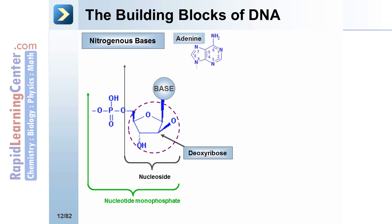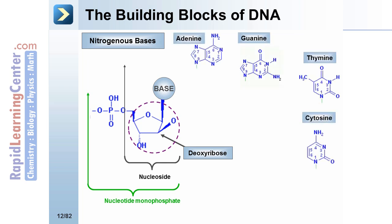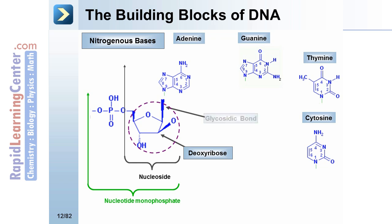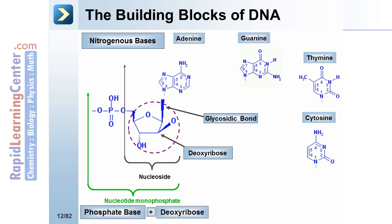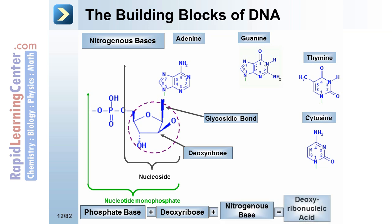The nitrogenous base is adenine, guanine, thymine, or cytosine. It attaches to the sugar — the deoxyribose — via a glycosidic bond between the sugar and the nitrogenous base. Phosphate plus deoxyribose plus the nitrogenous base equals deoxyribonucleic acid.